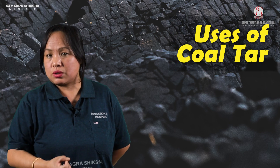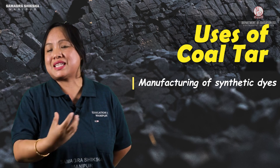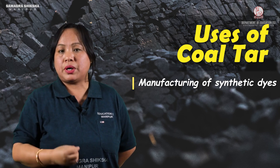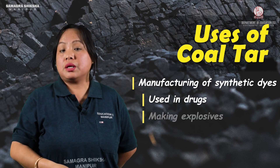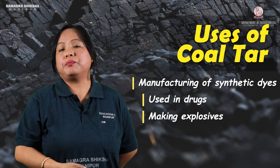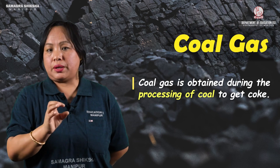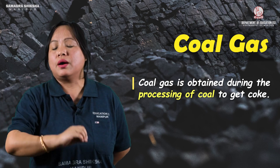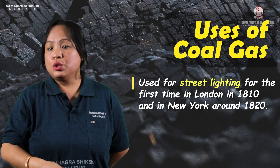Coal tar is used to produce synthetic dyes, drugs and medicines, explosives, perfumes, and other products. Coal gas is also obtained when coal is processed. Coal gas was used for street lighting for the first time in London in 1810, and in New York around 1820.